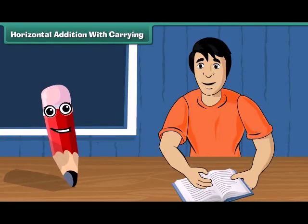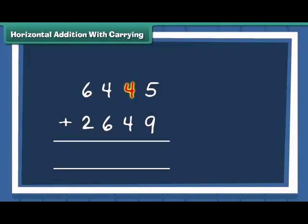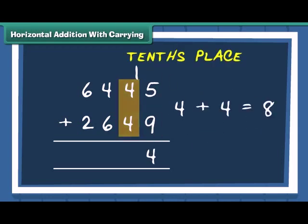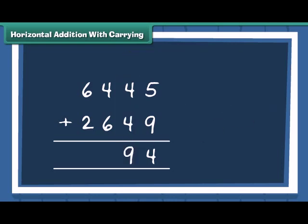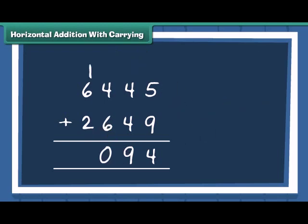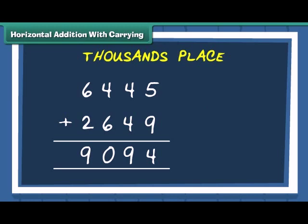Let us practice one more example with a bit of a twist. We have 2 numbers, 6445 and 2649. Add the numbers at ones place. Now carry 1 to the tens place. Add the tens. Then add the numbers at hundreds place. We have 1 number carried on to thousands place. Add thousands to make the final answer. So, the answer to the problem is 9094.